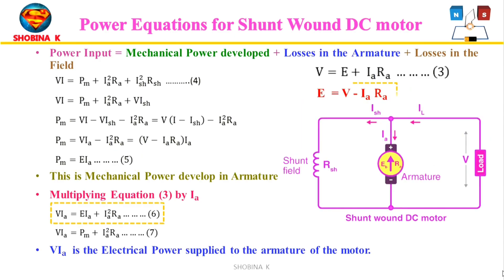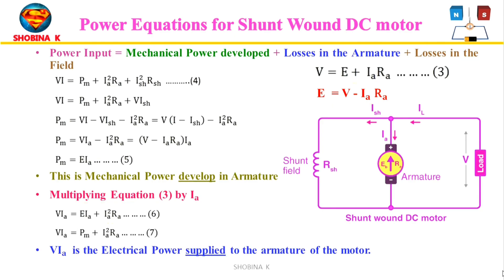Multiplying the voltage equation by IA gives: V·IA = E·IA + IA²·RA. Since mechanical power PM = E·IA, replacing E·IA with PM gives the power equation of DC motor. Here V·IA is the armature input (electrical power supplied to armature), E·IA is the armature output, and IA²·RA is the electrical power wasted in the armature. About 5% of armature input is wasted as IA²·RA, and the remaining amount E·IA is converted into mechanical power within the armature.